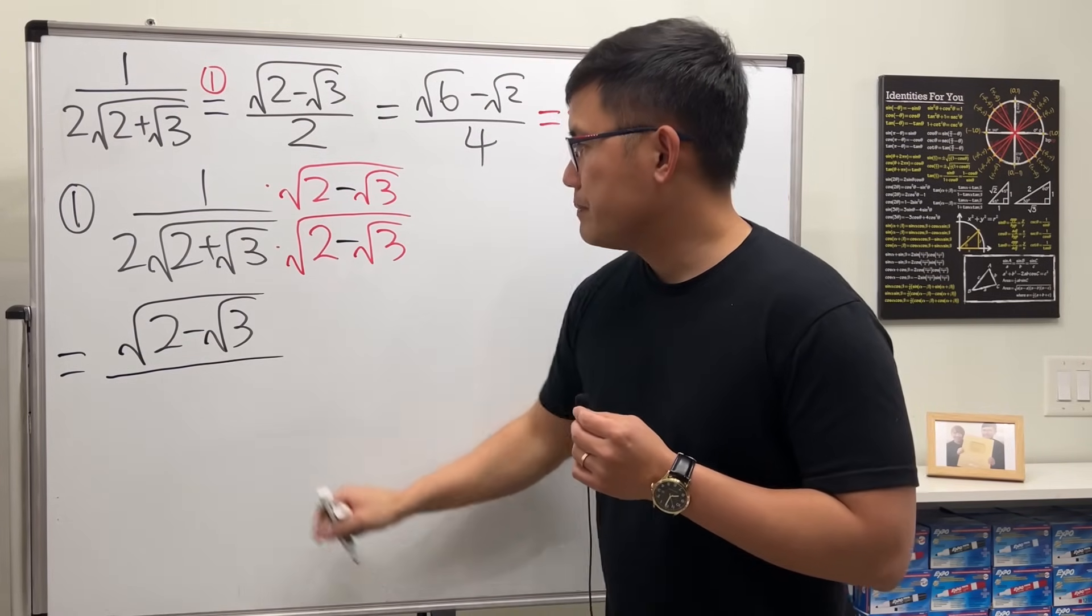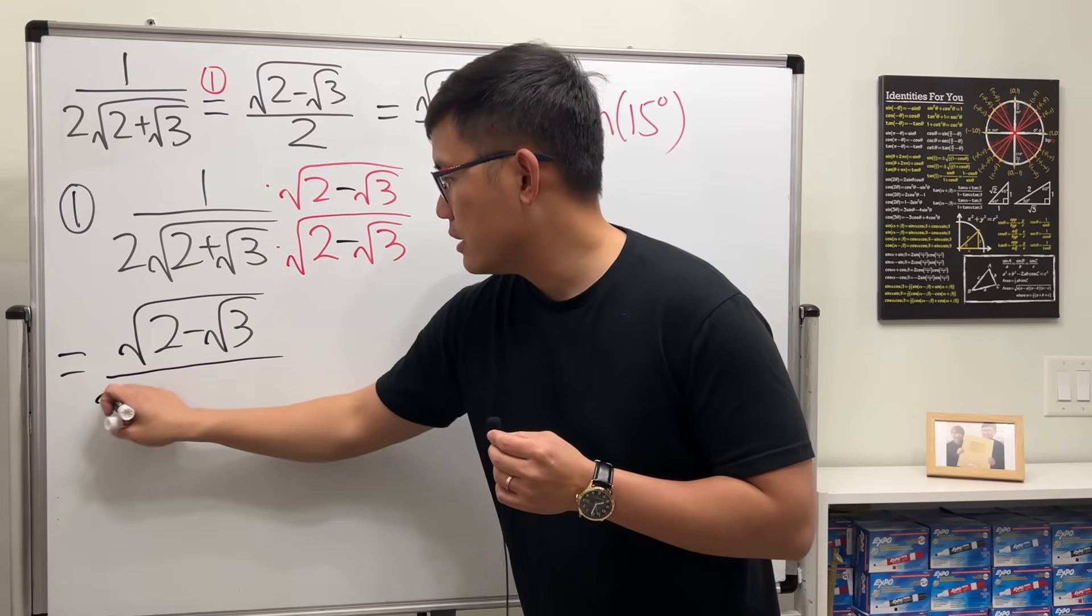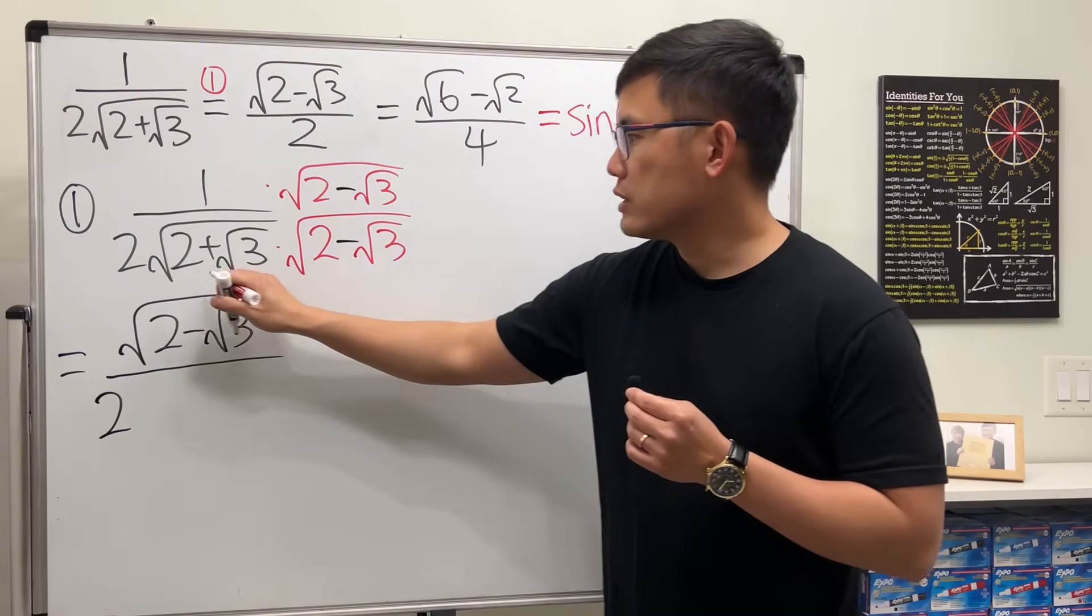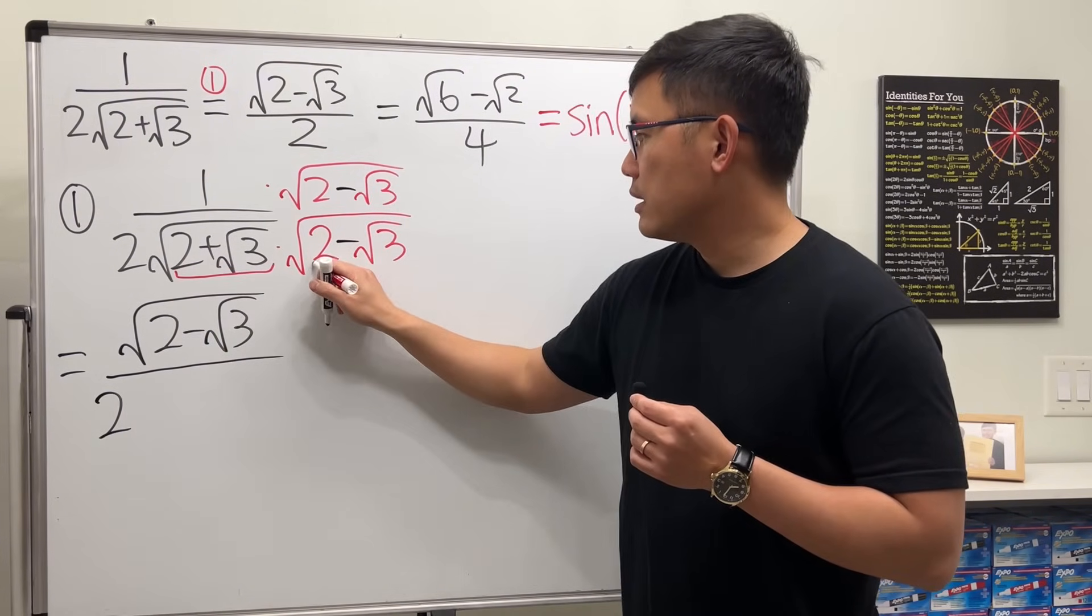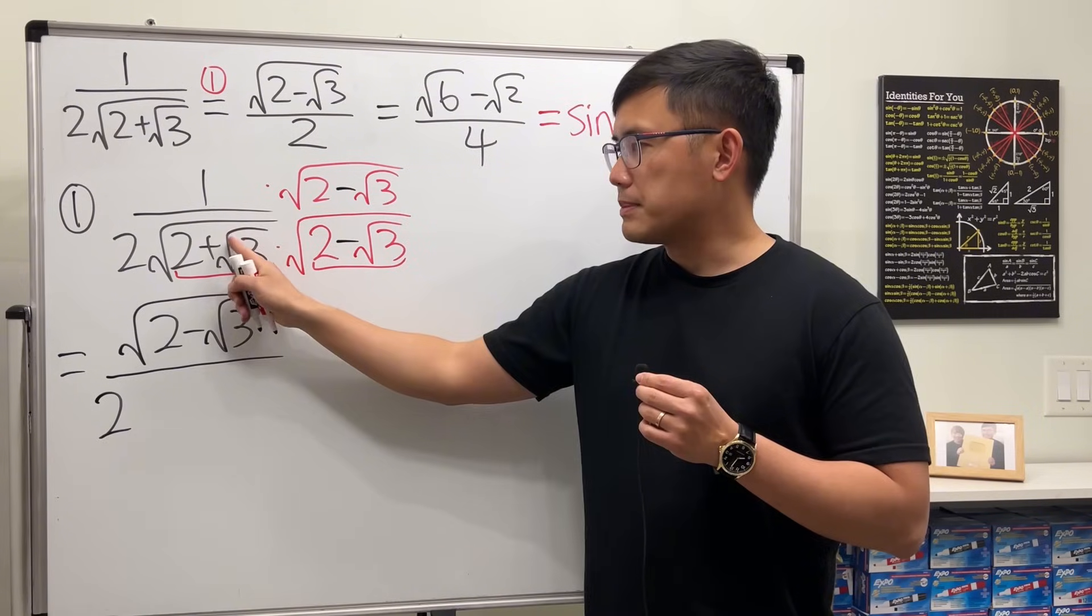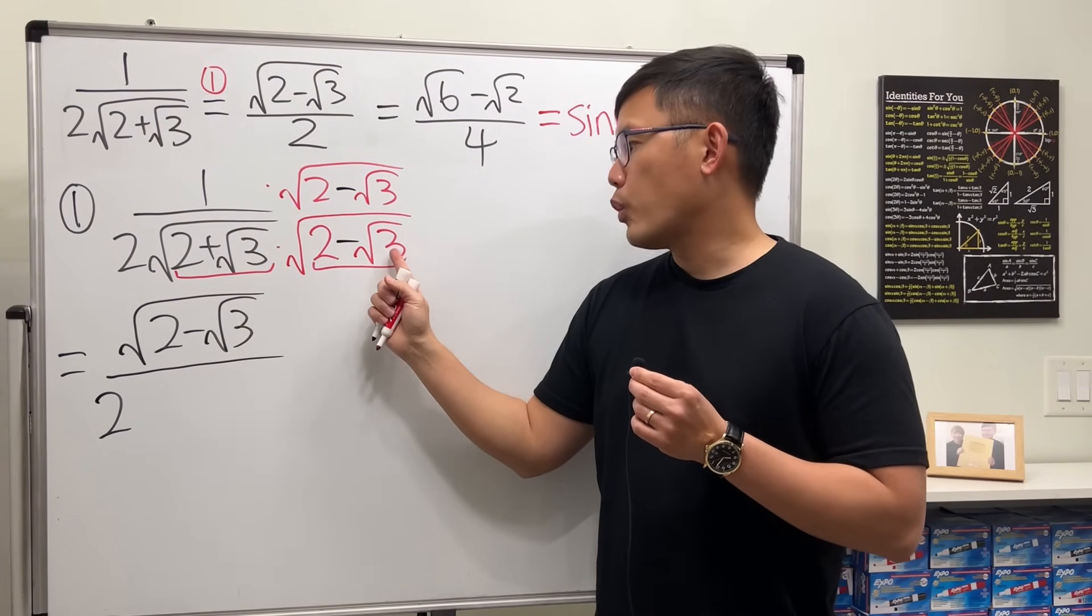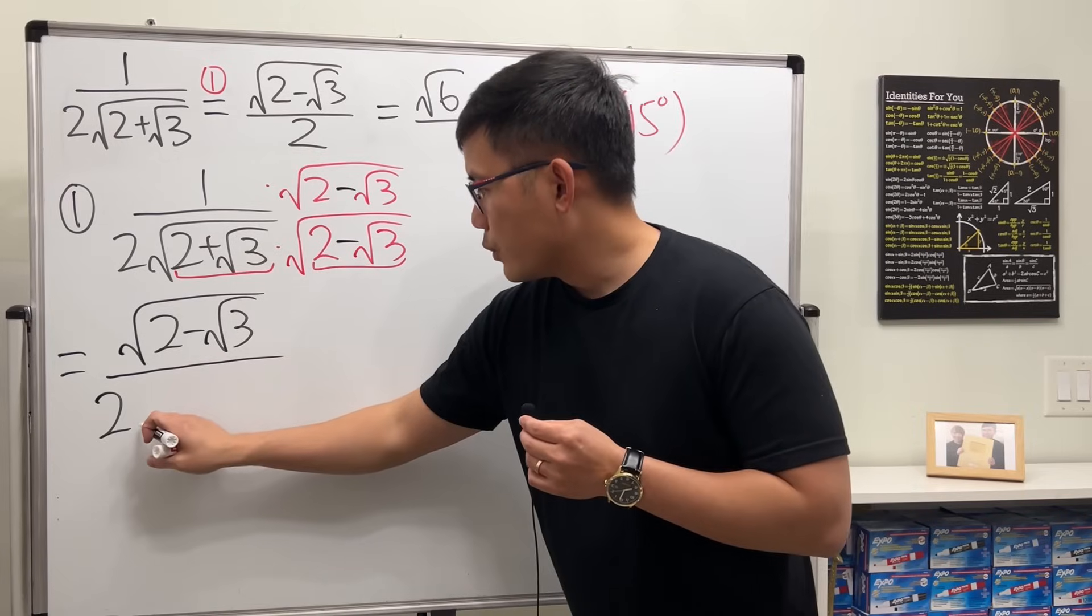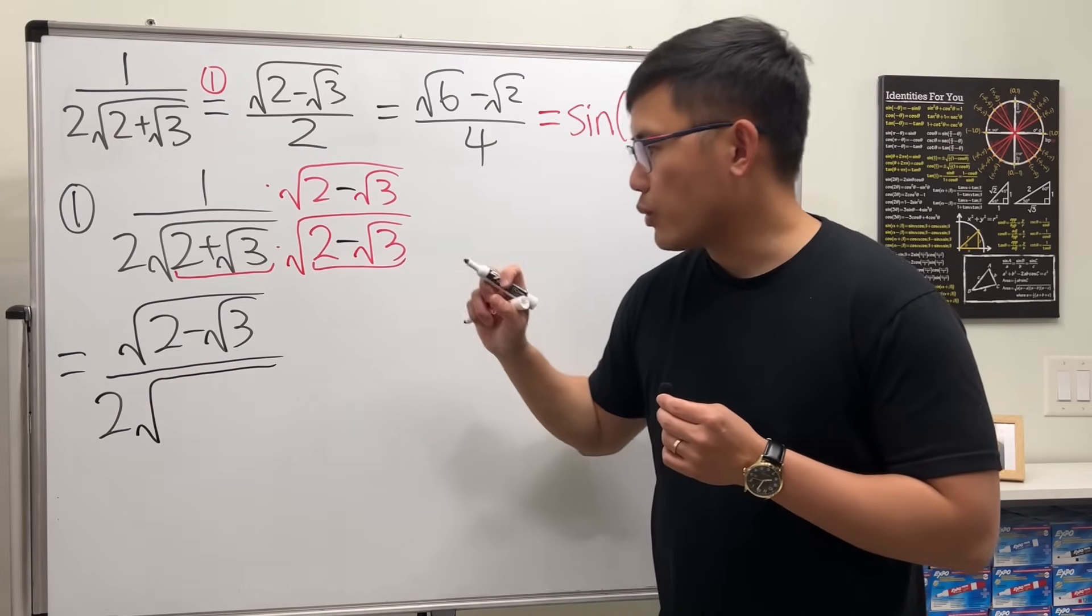As of the bottom, we have a 2 in the front. And then square root of this times square root of that. We can just multiply the inside together. Because this inside is positive, and this is also positive. Because square root of 3 is less than 2. So we can multiply that and put that inside of the square root.